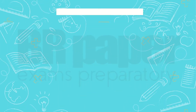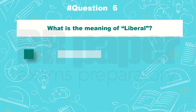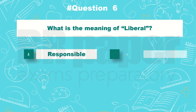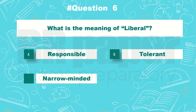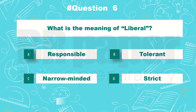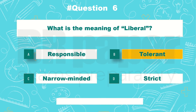Question 6: What is the meaning of liberal? Correct answer: B, tolerant.